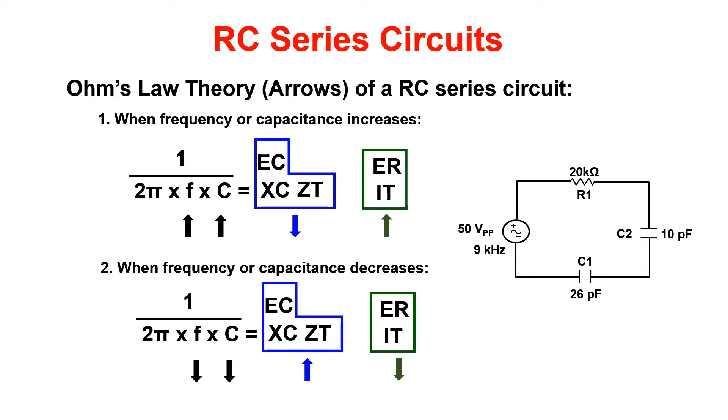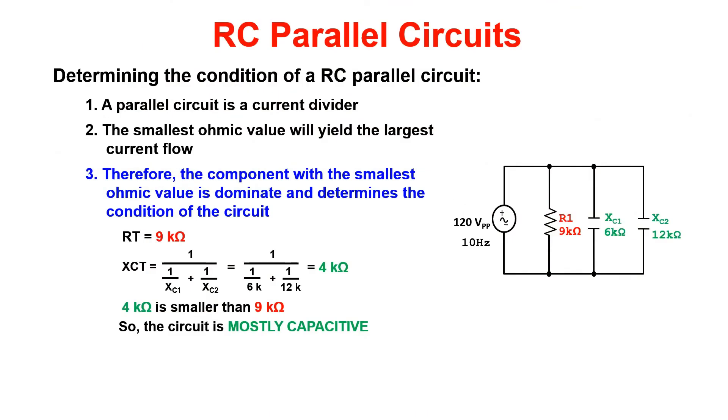Parallel circuits are known as current dividers. Therefore the smallest ohmic value will yield the largest current flow. The component with the smallest ohmic value is dominant and will determine the condition of the circuit. In this circuit the lowest ohmic value is 4k and it belongs to the capacitor. Therefore we would call this circuit mostly capacitive.